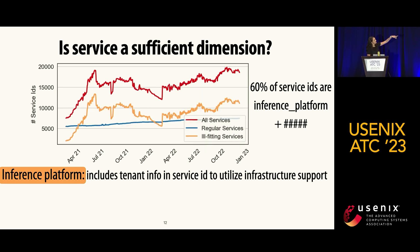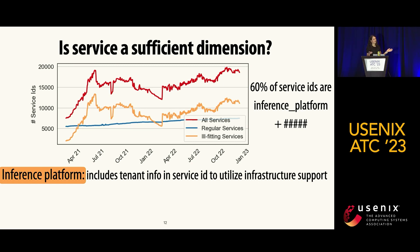When I split this series into just the ill-fitting services — the inference platform shown in yellow — and everything else shown in blue, you see that all of the variation is associated with the inference platform, and all other services are relatively stable.